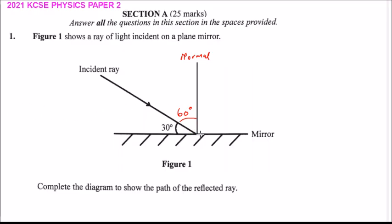So what you do is you measure an angle of 60 here. You measure an angle of 60 and make the reflection ray. That is where we have the angle of 60.